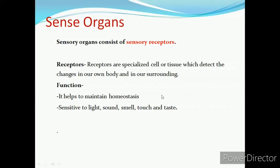Sense organs. Sensory organs consist of sensory receptors. Receptors are specialized cells or tissues which detect the changes in our own body and in our surrounding. Functions of sense organs: it maintains the homeostasis and they are sensitive to light, sound, smell, touch and taste.